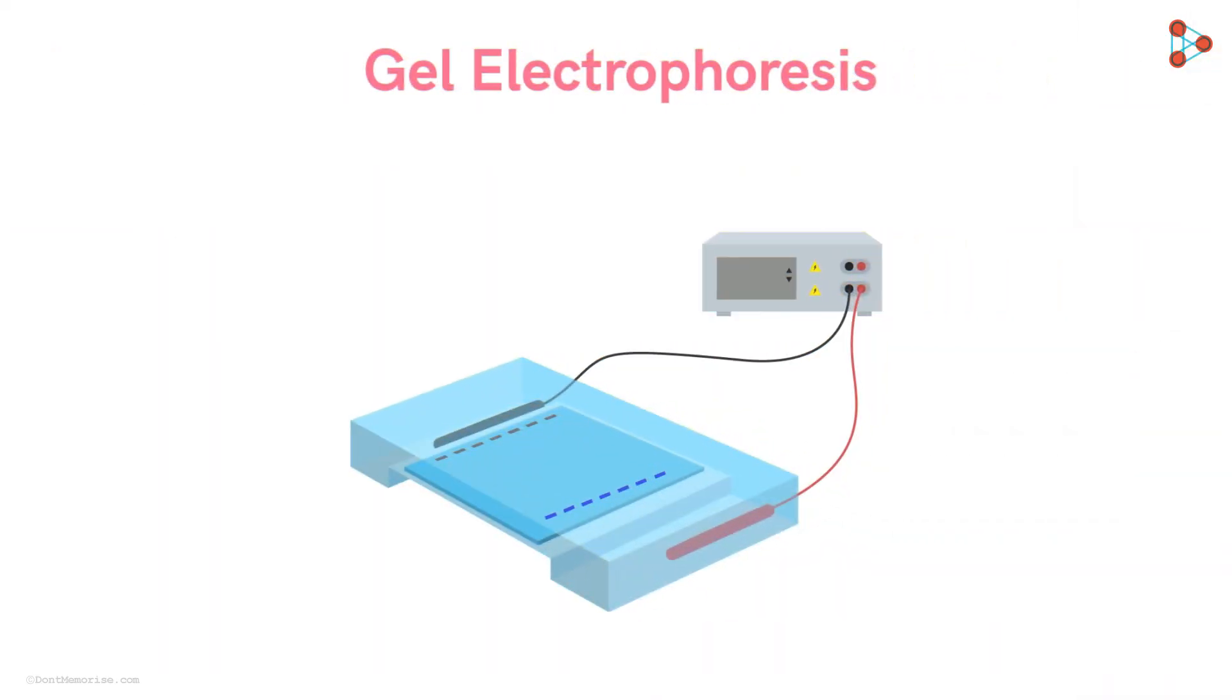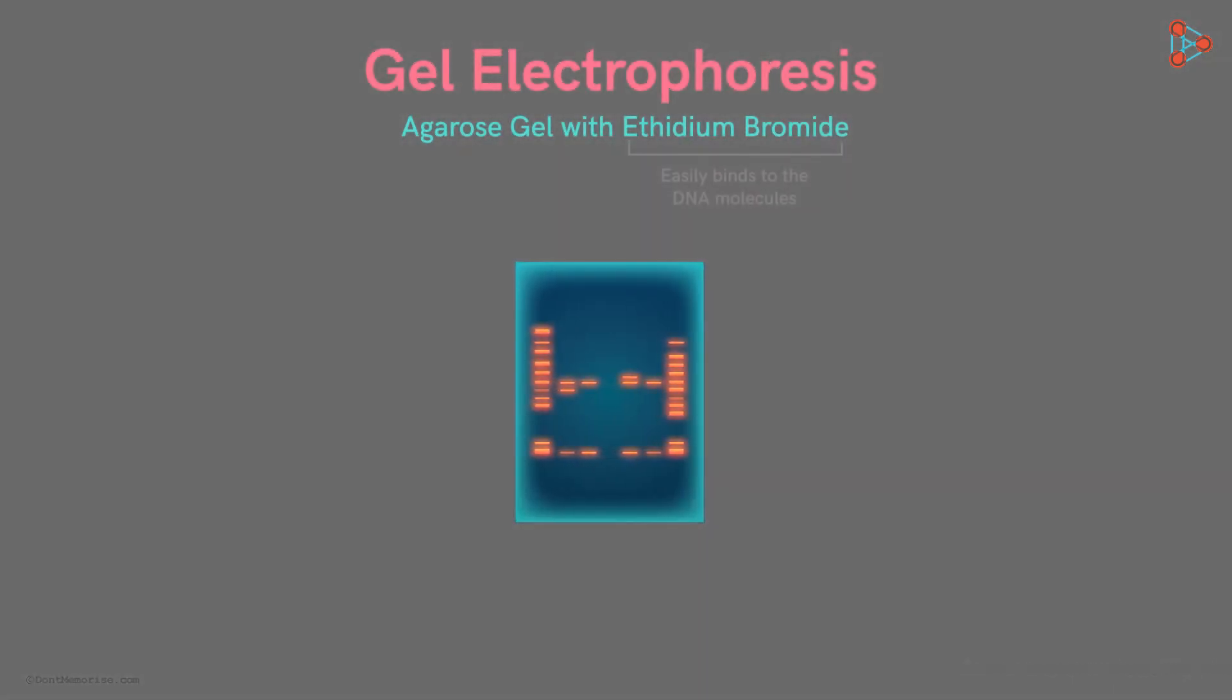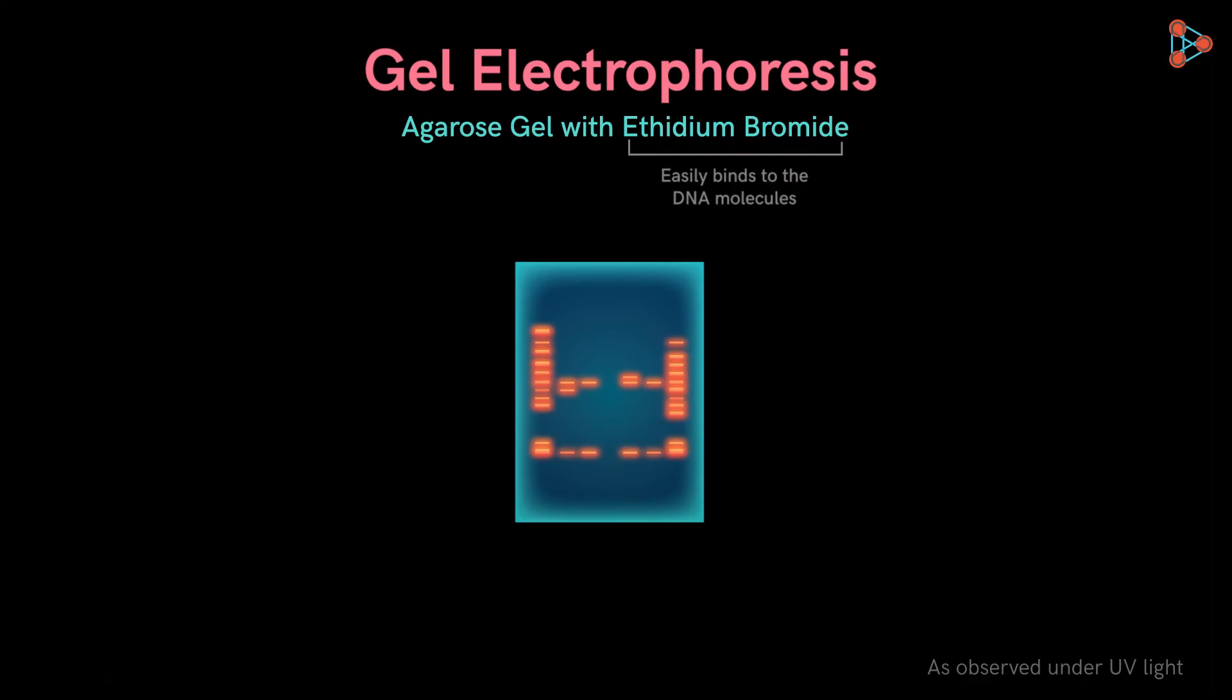To observe the DNA molecules, we treat the agarose gel with ethidium bromide solution. The major reason for using ethidium bromide is that it easily binds to the DNA molecules, and when the agarose gel containing the DNA is observed under ultraviolet light, bright orange colored bands are clearly seen. These are nothing but the bands of the DNA.